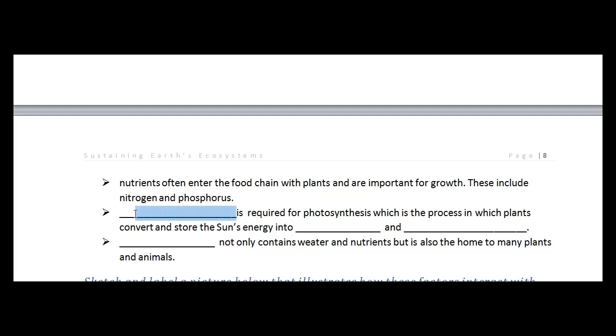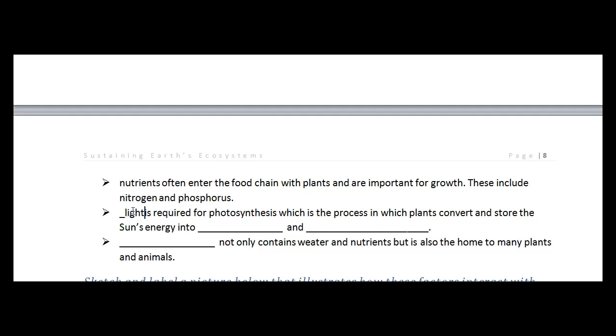The third one that we'll be looking at is light. And light is key. Light is required for photosynthesis, which is the process in which plants convert and store the sun's energy into starches and carbohydrates. Starches and carbohydrates. And that's where we get our energy from as animals.